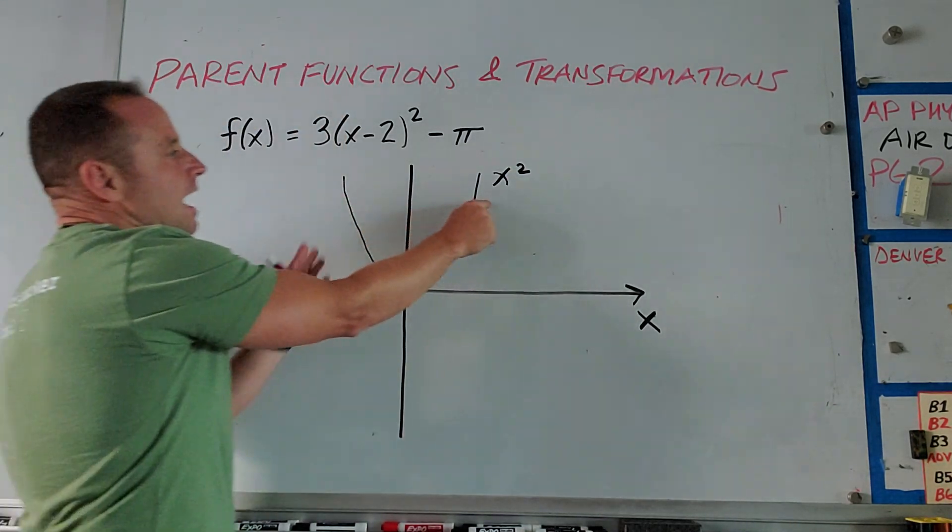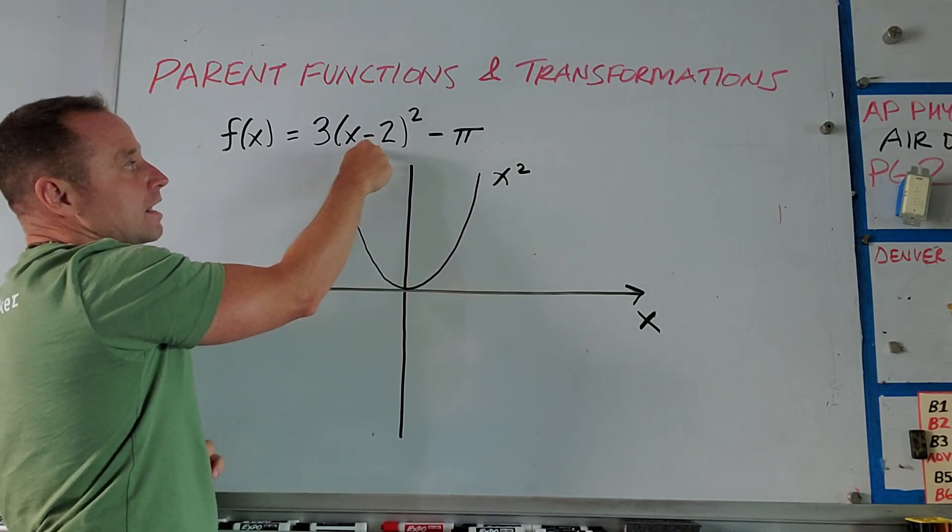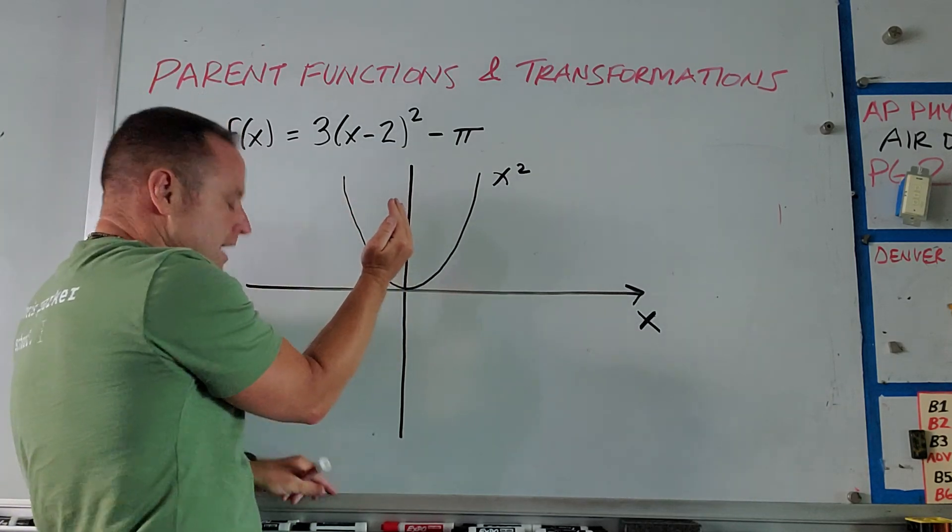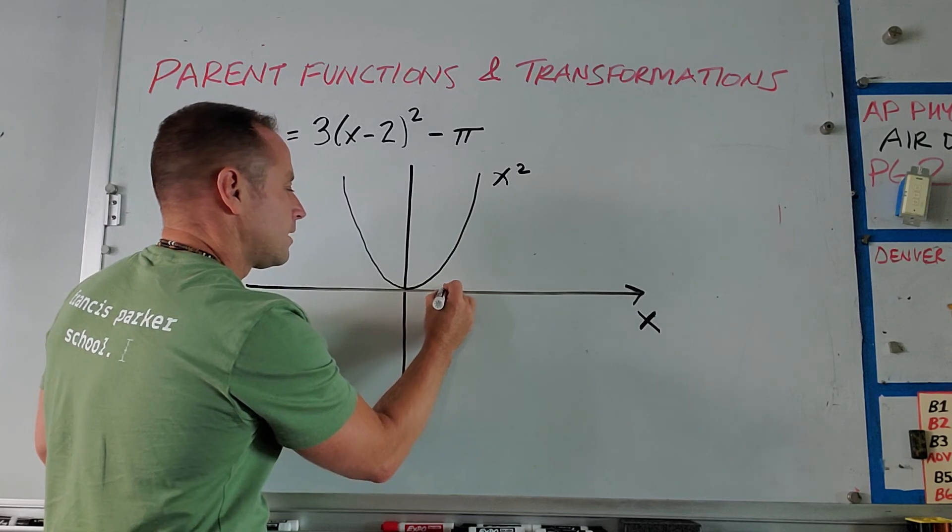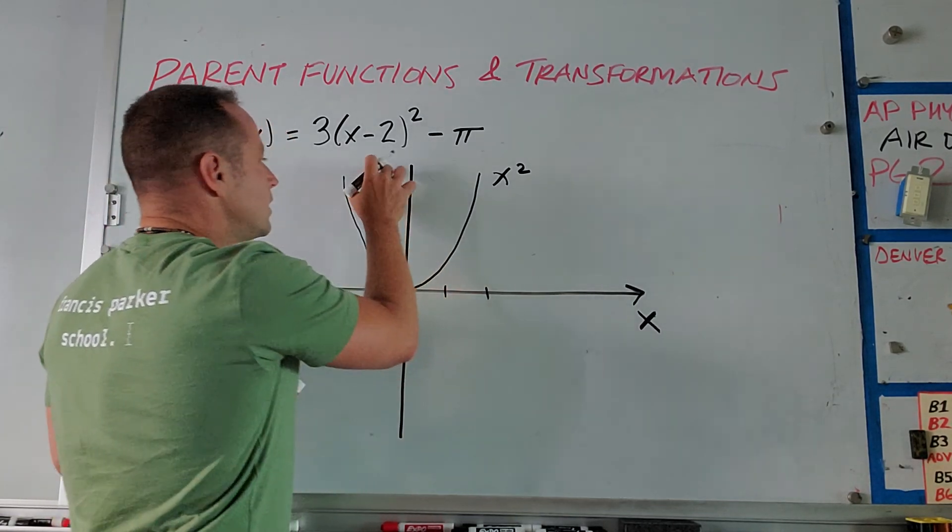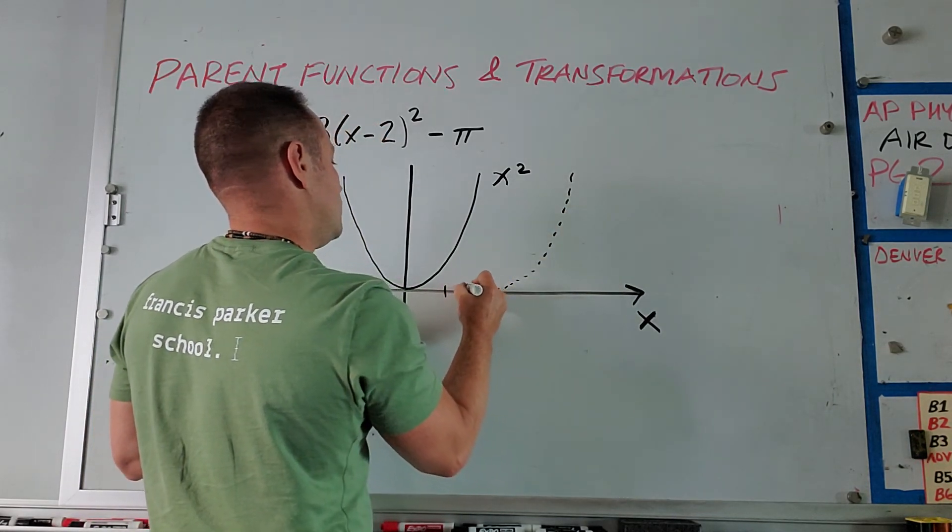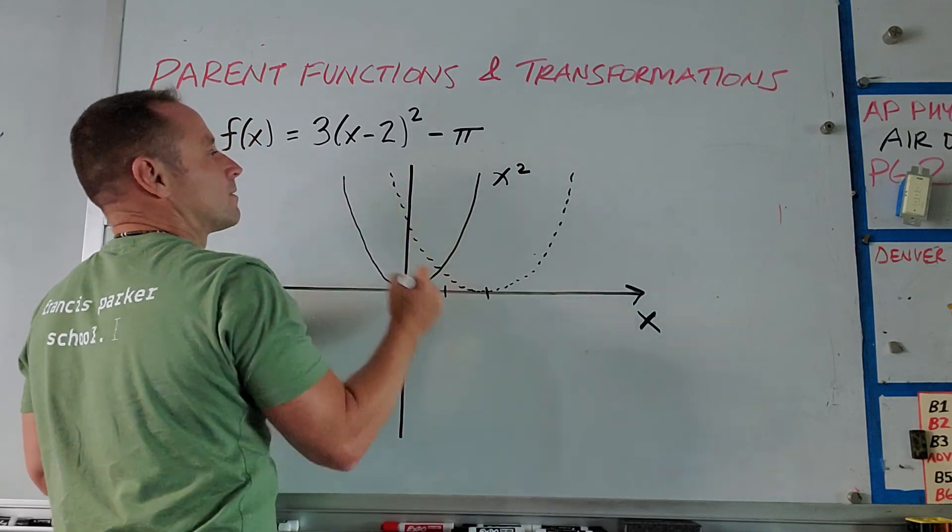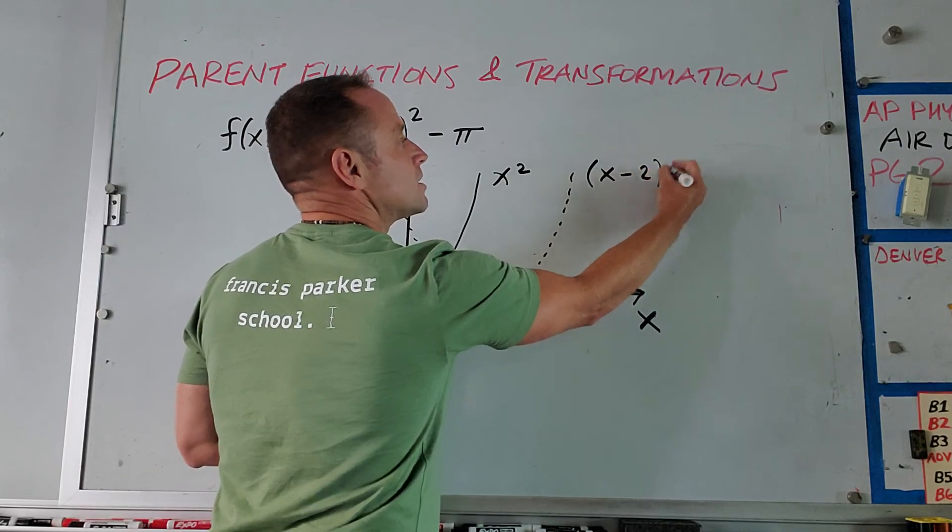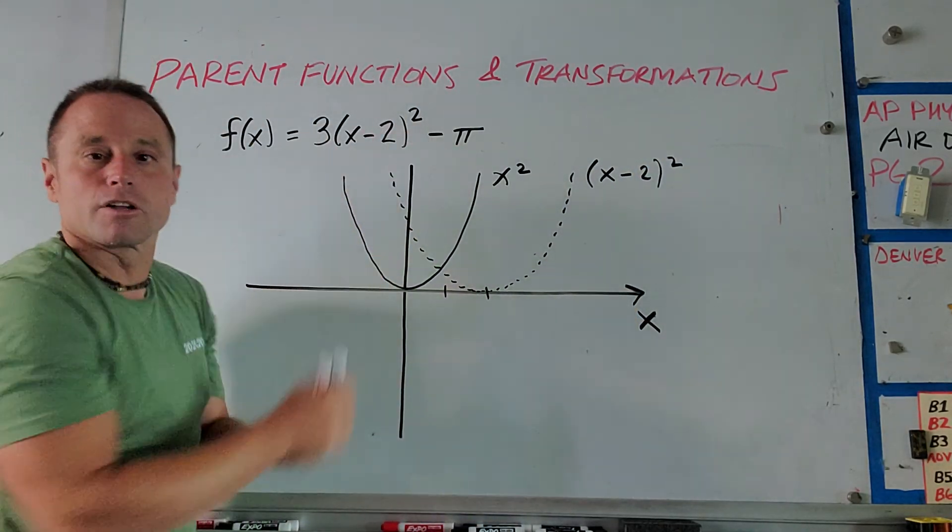Now the next thing that happens here to add a little layer of complexity is before we square it, we're actually subtracting 2. And so what that's going to do is take this exact same graph and just shift it 2 units over to the right. So let's shift over 2 units to the right. And what we're going to do is draw this exact shape, but shift it over here by 2 units. So this dotted line thing is going to be the graph of x minus 2 squared. So that's the first little change that we've made.